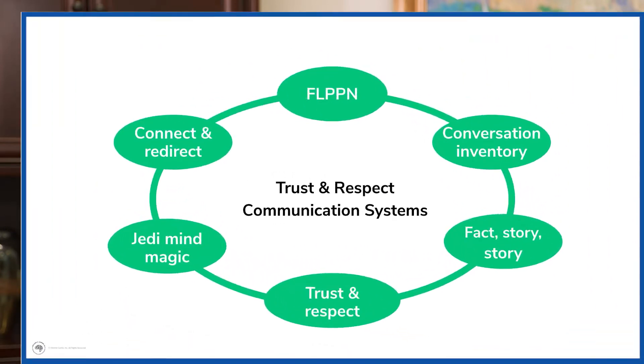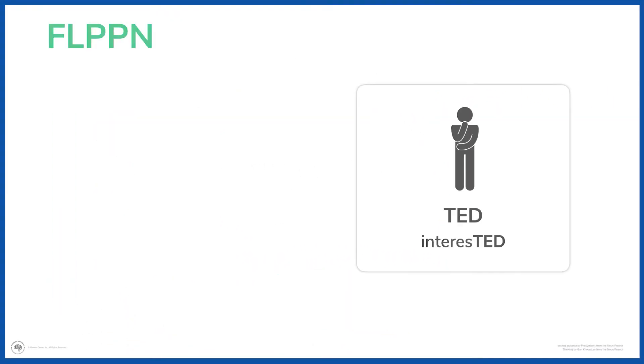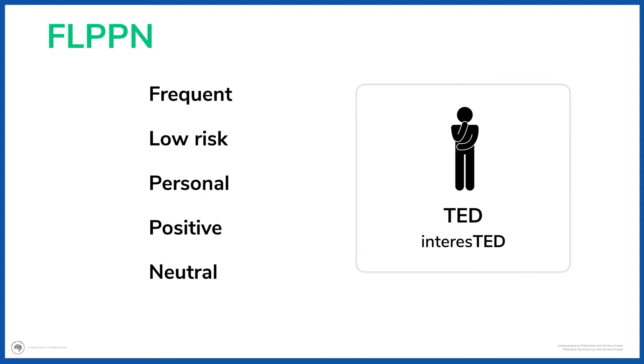The purpose behind Flippin is to go from eroded trust, low trust, or broken trust, to increase the level of trust between you and another person. The technique uses the acronym FLIPPIN — the F stands for Frequent, meaning often, as many conversations as you can. So if I'm a father trying to develop trust and respect with my son, I'm going to have multiple conversations as often as I can.